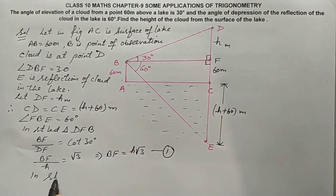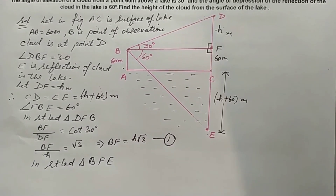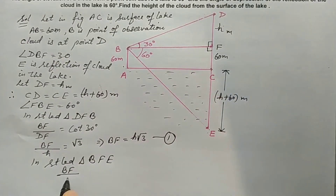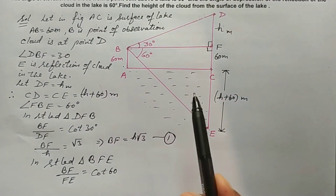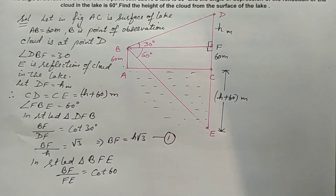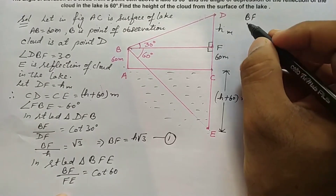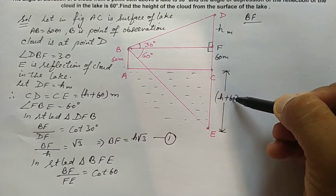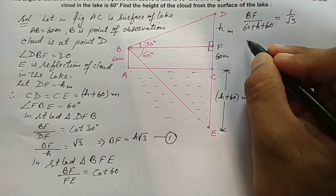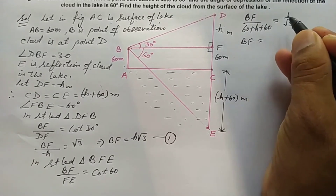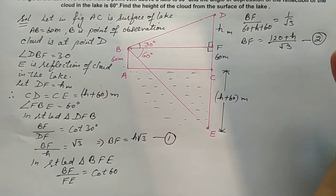In right-angled triangle BFE, BF over FE equals cot 60 degrees. FE equals 60 plus h plus 60, which is h plus 120. So BF over (h plus 120) equals 1 over root 3. Cross multiplying, BF equals (120 plus h) over root 3. This is equation 2.